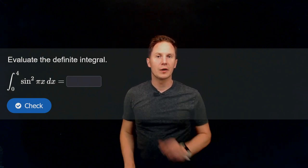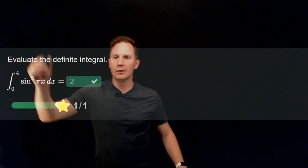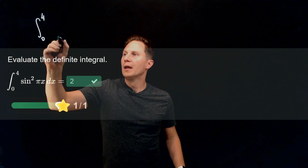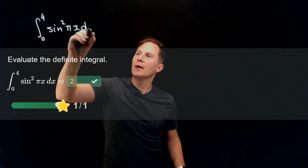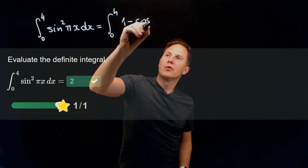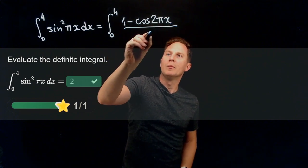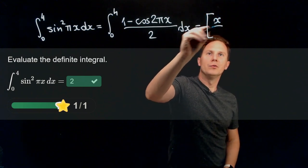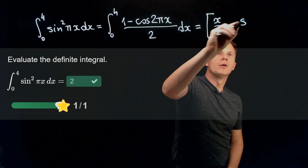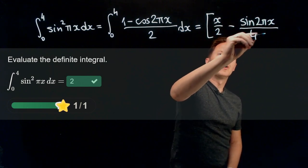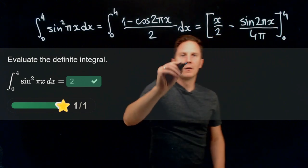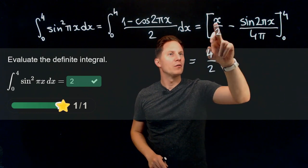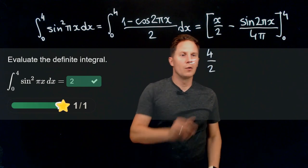Evaluate this definite integral — the value is 2. We lower the exponent of sin squared(pi x) using the double angle formula for cosine, writing sin squared(pi x) as (1 minus cos(2 pi x)) over 2. Splitting the integral gives the antiderivative x over 2 minus sin(2 pi x) over (4 pi), evaluated from 0 to 4. At x equals 4, sin(8 pi) equals 0, and at x equals 0, both terms vanish, so the result is 4 over 2 equals 2.